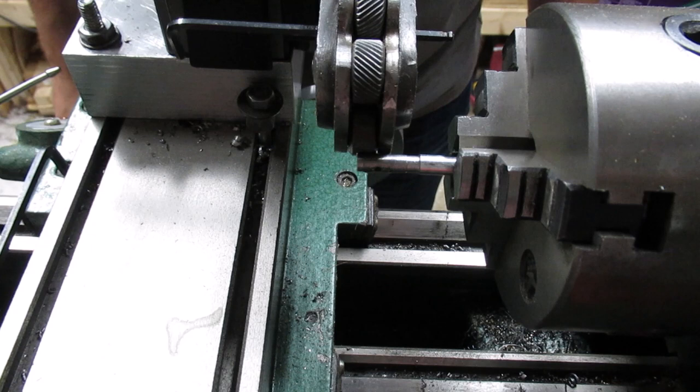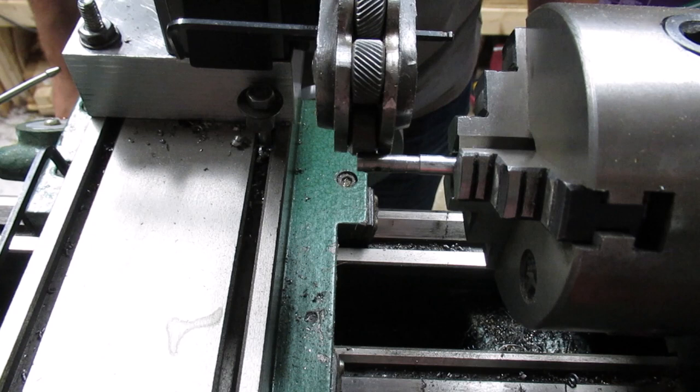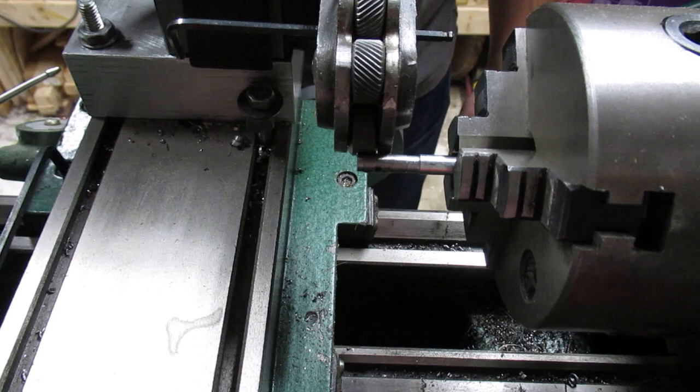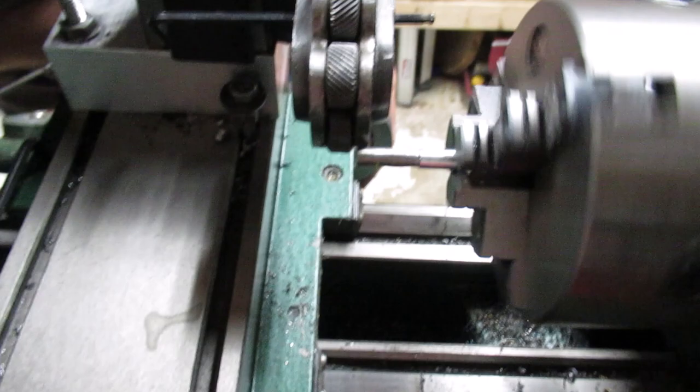Now it's always really tough to knurl at such a small diameter, especially on a bump knurler and a small lathe like this because it's just going to flex. So I'm going to do the best I can here, run it low with oil and see how it cuts.